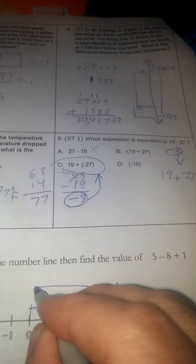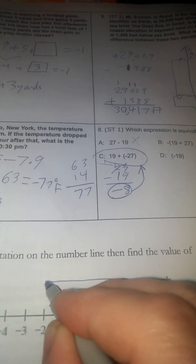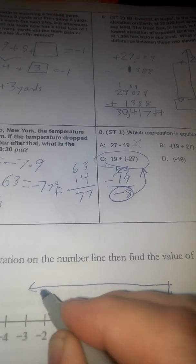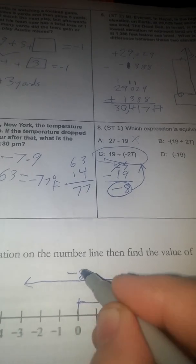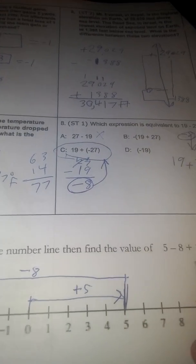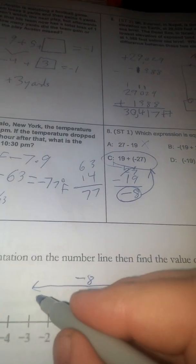And then I'm going to subtract 8. I'm going to just make this like this. Go down 5, add another 3 more.